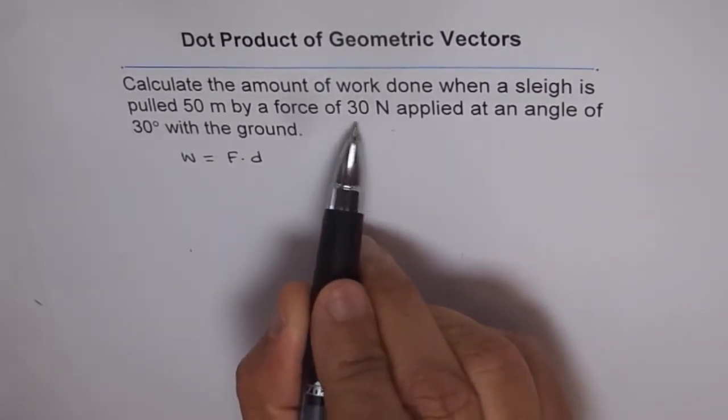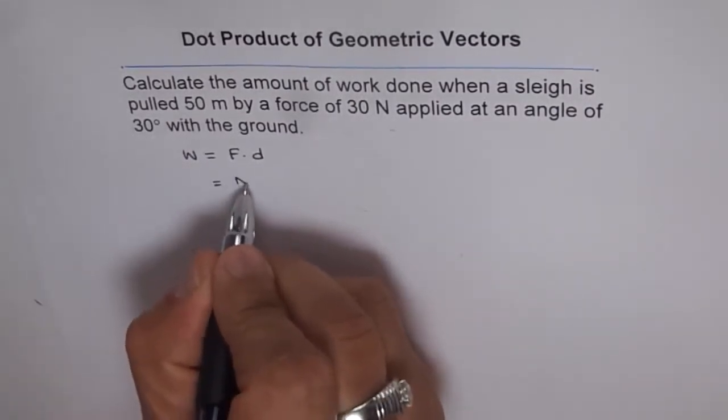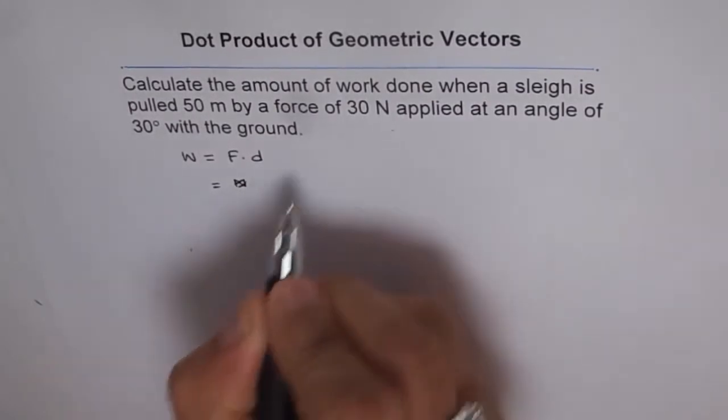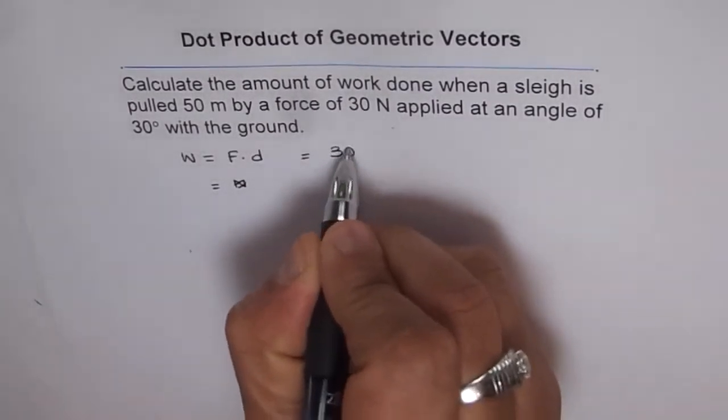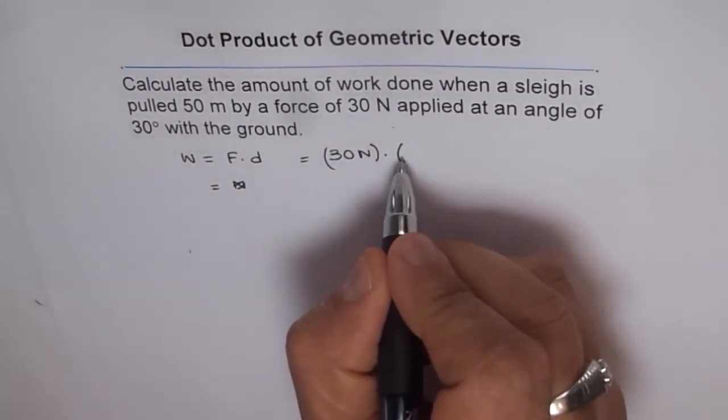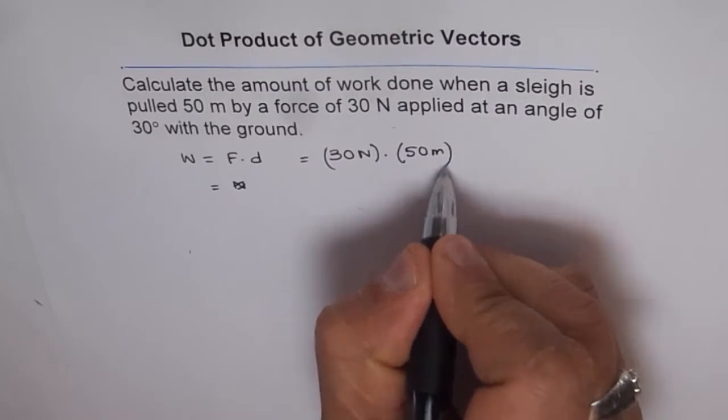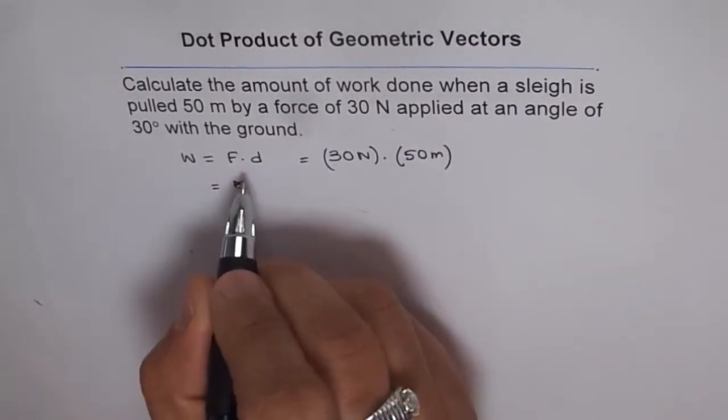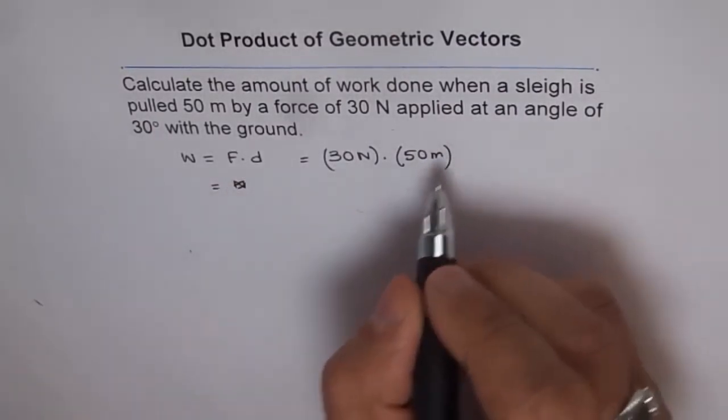We are given a force of 30 newtons. So we write 30 newtons dot 50 meters. The dot product F dot D equals F D cos theta,